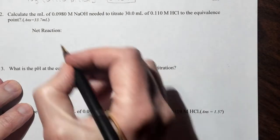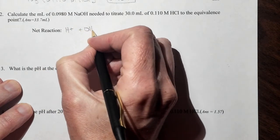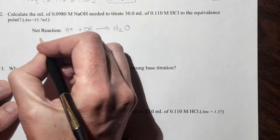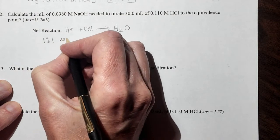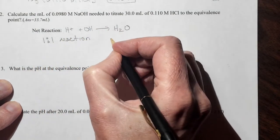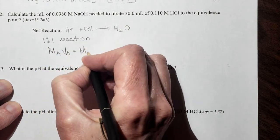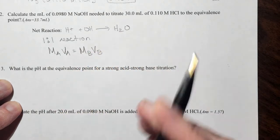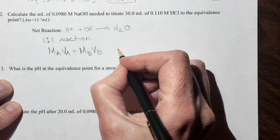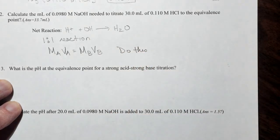So our net reaction here, because we're dealing with a strong acid and a strong base, is H+, plus OH-, produces H2O. Now this is a one-to-one reaction. And remember that if we have a one-to-one reaction, you may use MAVA equals MBVB. Remember, do not use this if the coefficients in the balanced reaction are anything but one. So you go ahead and do this, and I'll come back with the answer.